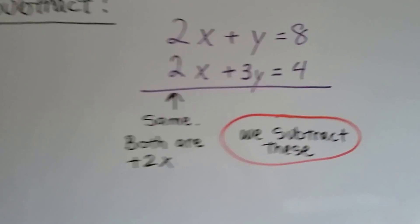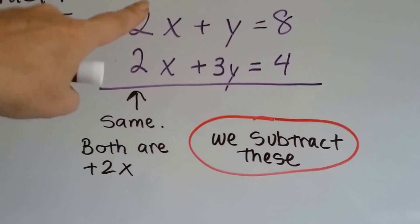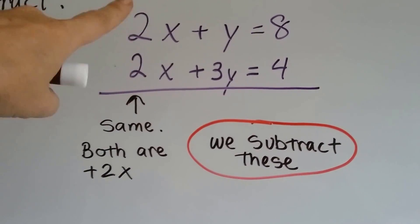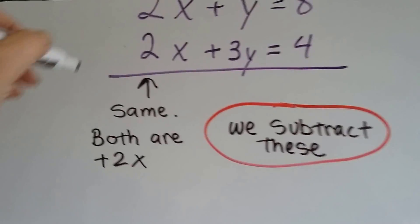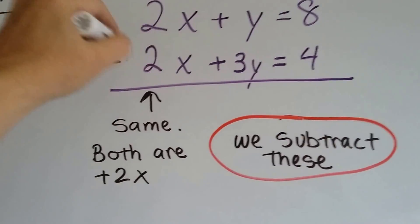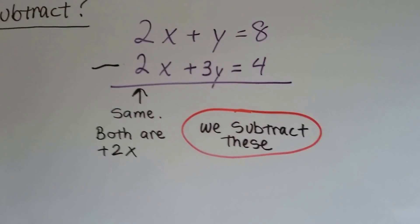Let's take a look at this. This would be subtracted because these are two positive 2x's here. Positive 2x over a positive 2x. So we would subtract this. These two are identical. That would be a subtraction problem.